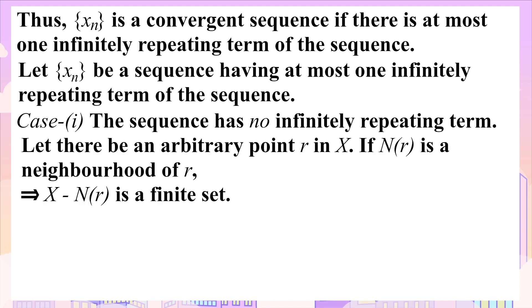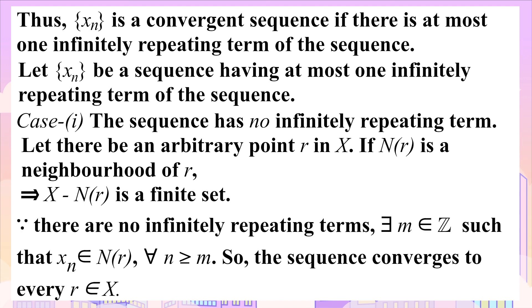Let's take an arbitrary point r in X. If N(r) is a neighborhood of r, this implies that the set X - N(r) is a finite set, as N(r) the neighborhood is an open set in the co-finite topology. Since there are no infinitely repeating terms, there exists a positive integer m such that xₙ lies in N(r) for each n ≥ m.